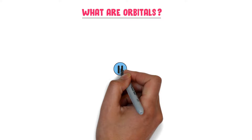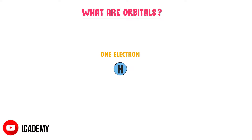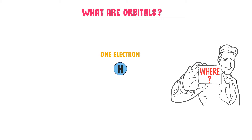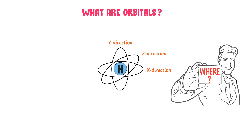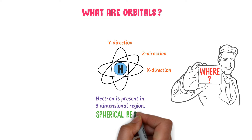Consider a hydrogen atom. We know that the hydrogen atom has only one electron and it is constantly revolving around the nucleus. If I ask you where it is revolving, the electron is either revolving in the x direction, the y direction, or the z direction. Thus, one can say that the electron of the hydrogen is present in this three-dimensional, spherical region around the nucleus.